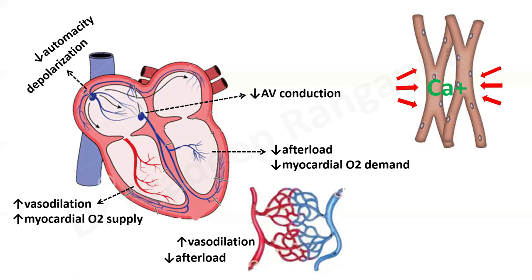For effective functioning of actin and myosin, optimal concentration of calcium within the myocardium is needed for effective myocardial contraction. Intracellular calcium levels are also needed to facilitate insulin release from the pancreas. Bear this in mind as to the rationale for why insulin is advocated in the management of calcium channel blocker toxicity — you need optimal intracellular calcium levels to facilitate release of insulin from the pancreas.